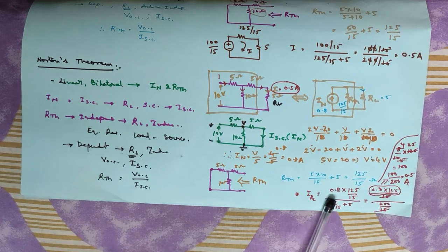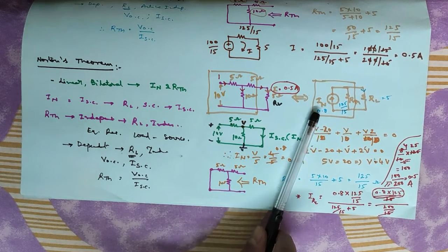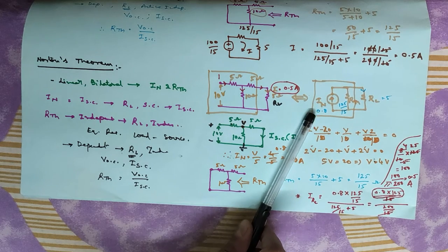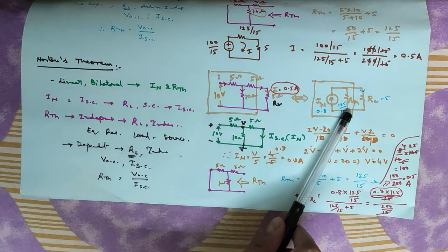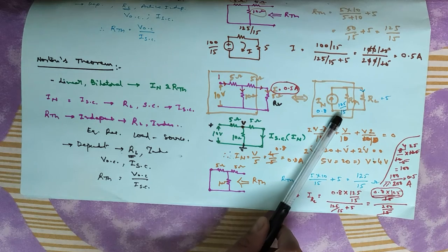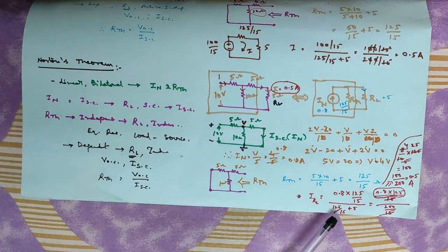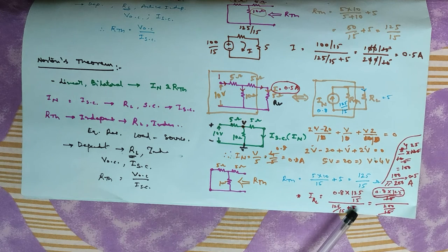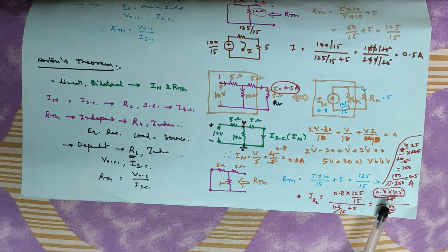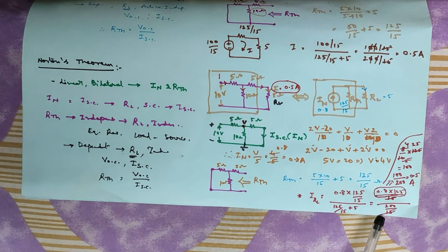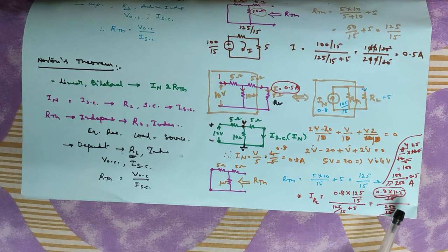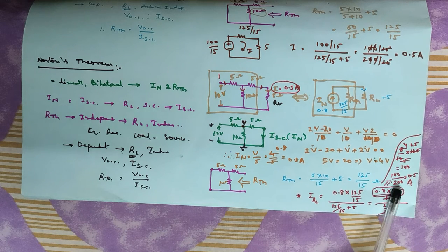The current through RL is: ISC multiplied by the opposite resistance. That gives (125/15) as the numerator divided by (125/15 plus 5). Simplifying with LCM, the 15s cancel, giving 1.5 A divided by values that simplify to 100 by 200 — that is, 0.5 A.